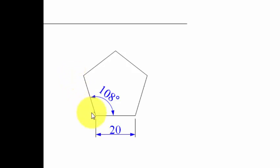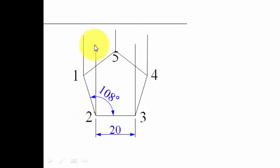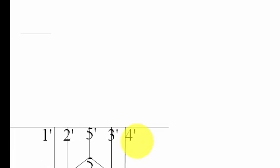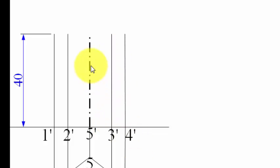Next, we draw the front view by projecting this object from the front. Using projector lines from the top view, we get points 1', 2', 3', 4', and 5' in the front view. The axis length is 40 mm, so each point is elevated by 40 mm. A dash-dot line represents the axis. We now have the complete front view and top view.